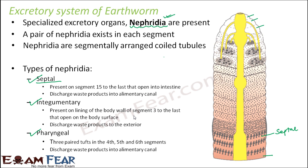Integumentary nephridia are present on the lining of the body wall from segment 3 to the last, and they open on the body surface. So from segment 3 onwards, here you have the integumentary nephridia — all these dot-like structures are nothing but integumentary nephridia. They discharge their waste products to the exterior; they do not send it into the alimentary canal but directly send it to outside.